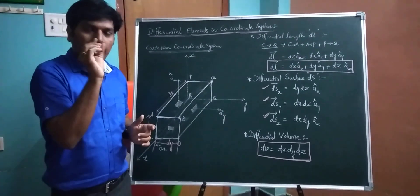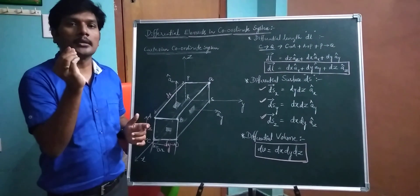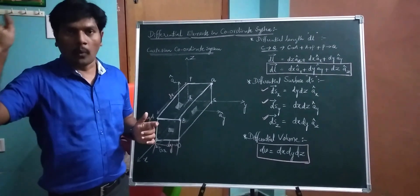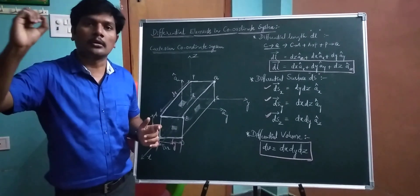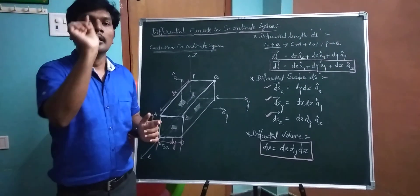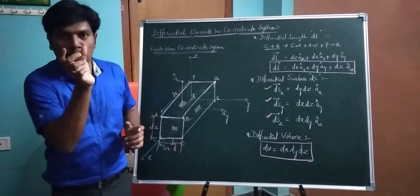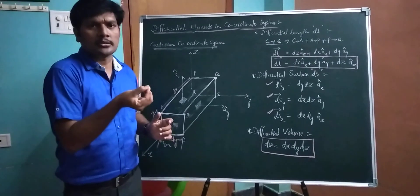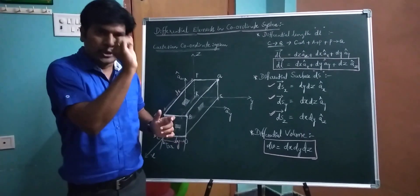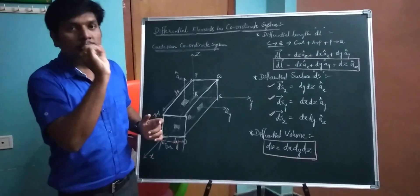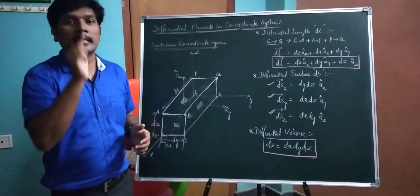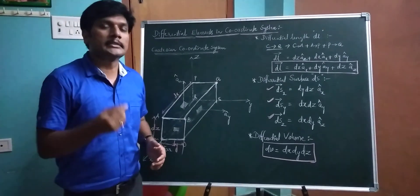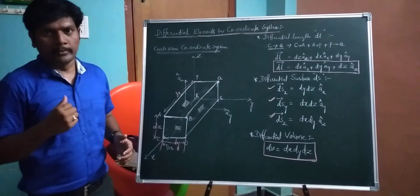Generally, a difference or change in a quantity is represented as delta x. If x is the quantity, any change in that quantity is denoted as delta x. When the change tends to zero — an extremely small, negligible change — delta x tends to zero and the term is denoted as dx. That is why it is also called a differential element.